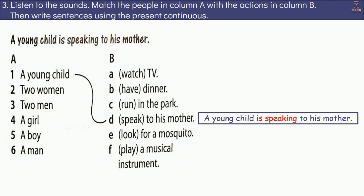Exercise 3: Listen to the sounds. Match the people in column A with the actions in column B, then write sentences using the present continuous.